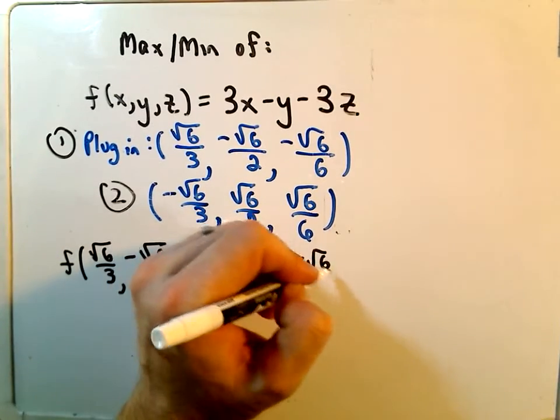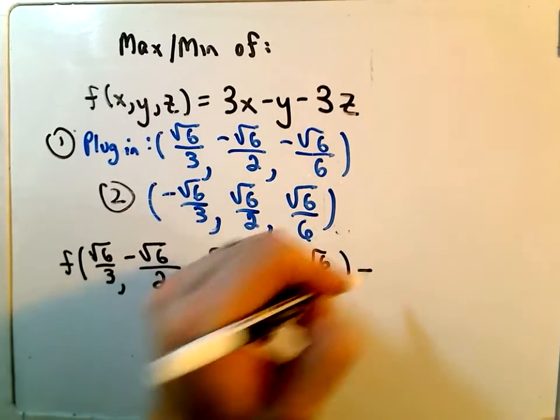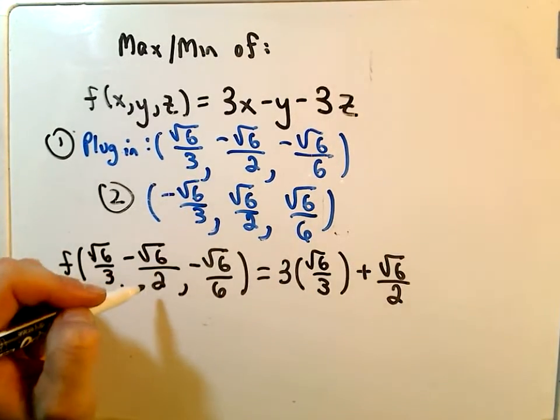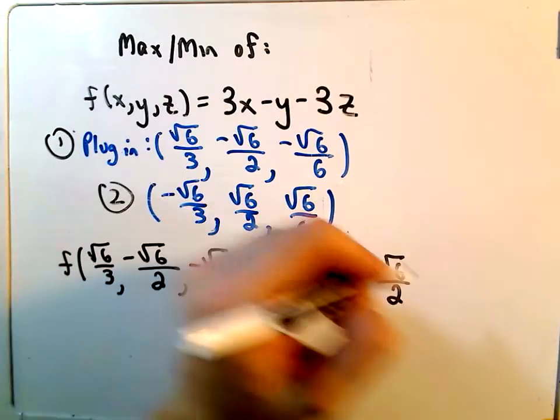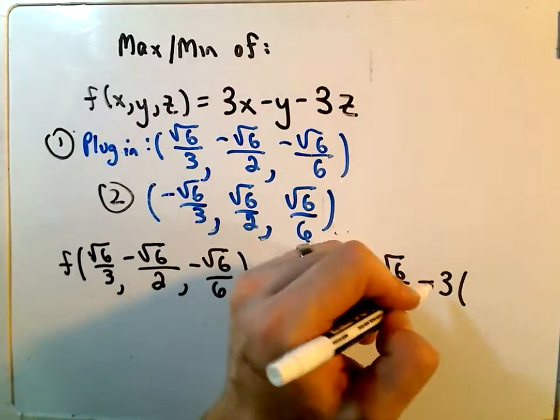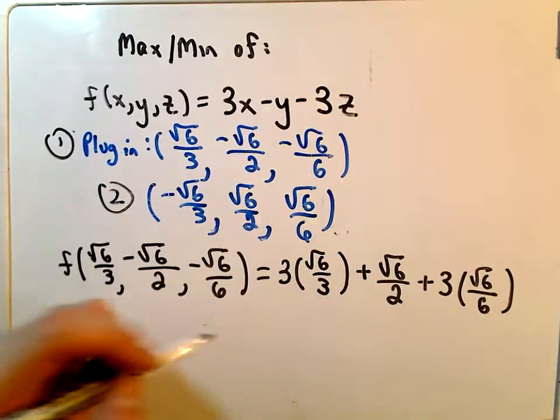So we'll get 3 times square root of 6 over 3. We've got minus a negative value, so that'll be positive root 6 over 2. Again, minus 3 times negative square root of 6 over 6, so that'll simply turn into positive square root of 6 over 6.